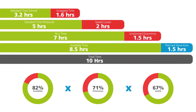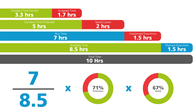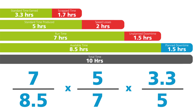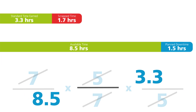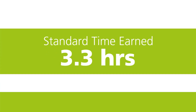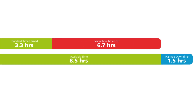However, we can also look closer into this if we break down and visualise the equations. Our availability is the ratio of runtime to available time. Our performance is the ratio of our standard time produced to runtime. And our quality is the ratio of our standard time earned to standard time produced. Basic algebra allows us to cancel out the duplicates across the equation, giving us another equation to calculate our OEE — the ratio of standard time earned to available time. Our bucket production process produced 3.3 hours worth of quality buckets in the 8.5 hours available. That's a loss of 6.7 hours of production time across this shift.